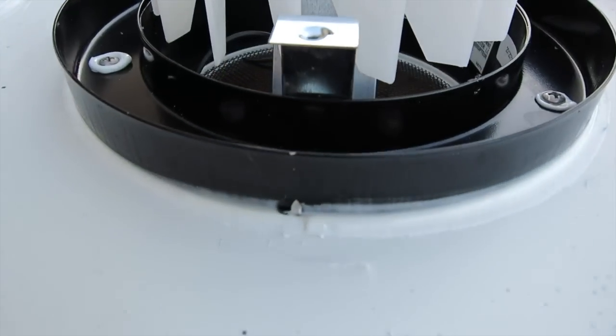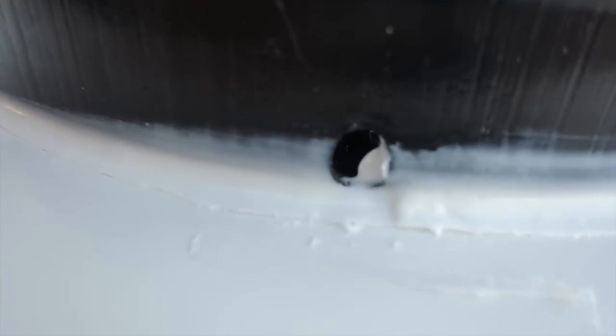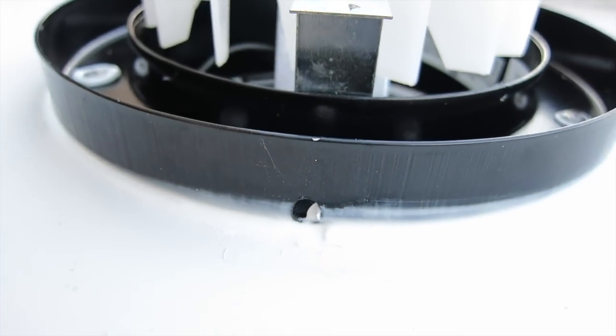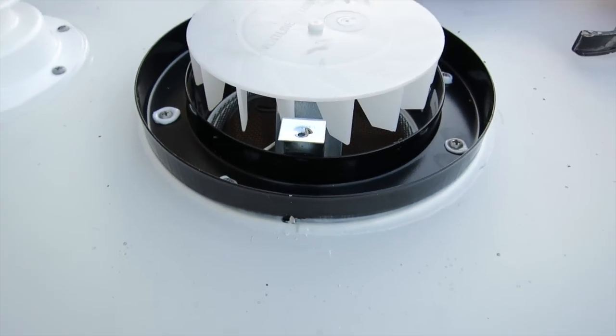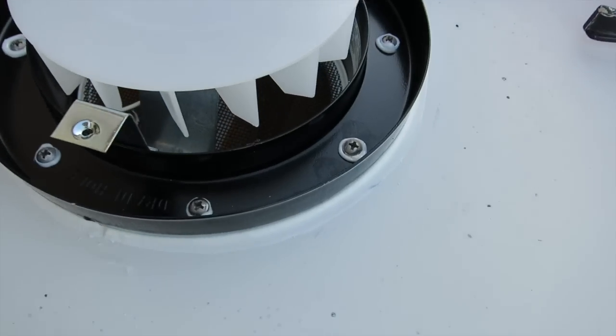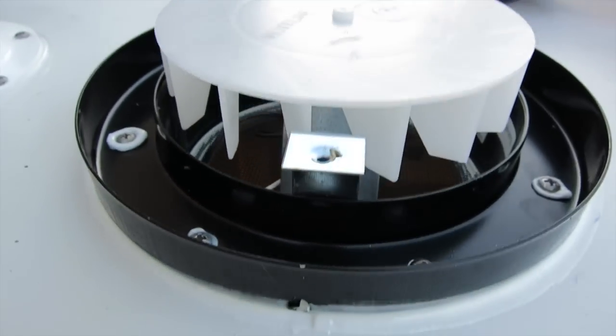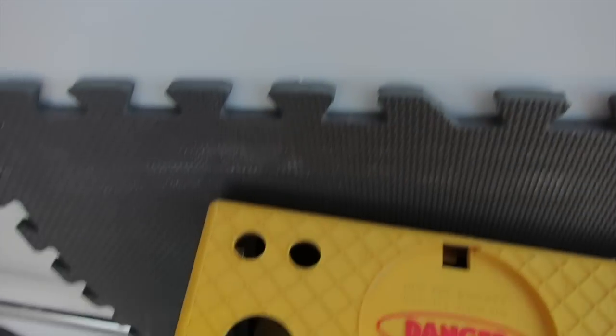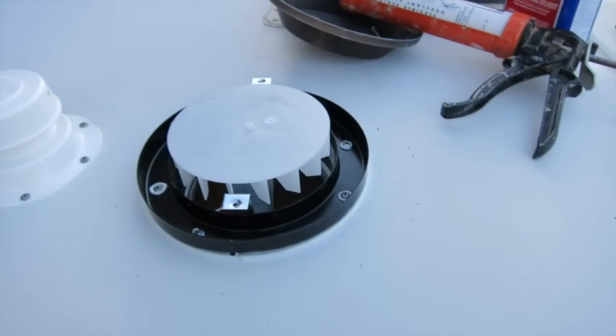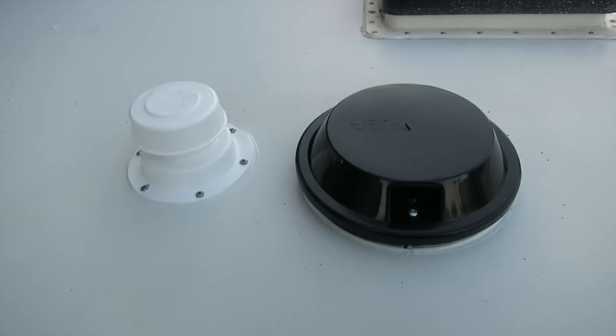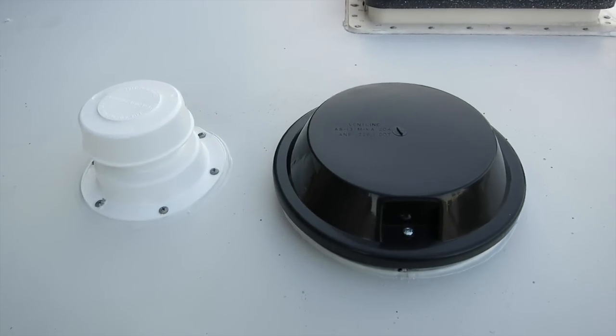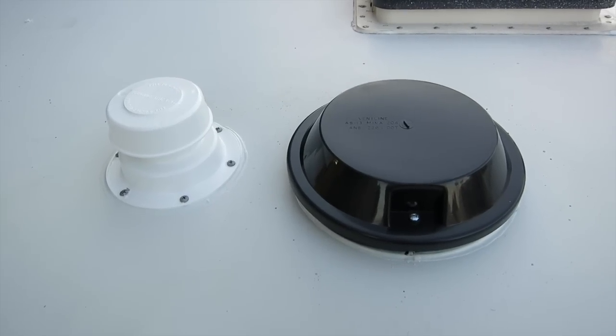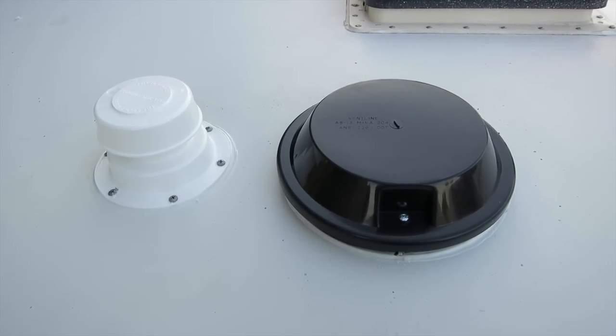When you do this you always want to make sure you've got your weep hole towards the downside. That way if any water bounces inside of here, it'll just come out the side and go down the side of the van. Alright, it's all buttoned down, good as new. I'm happy with that. Direct replacements are always the easiest.